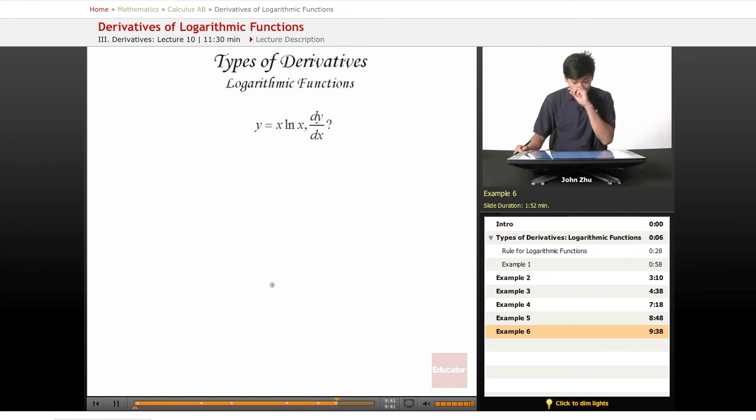One more example. Here we have two x terms multiplied together in different expressions. We know that most likely we'll have to take a product rule. So let's set u equals to x and v equals to ln of x.